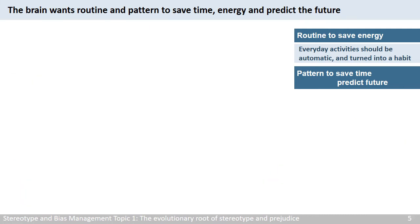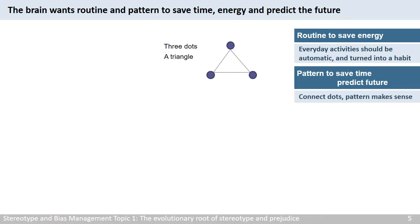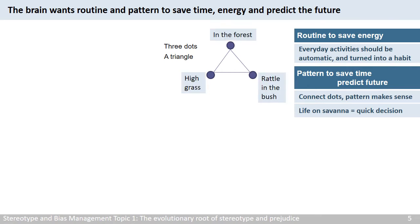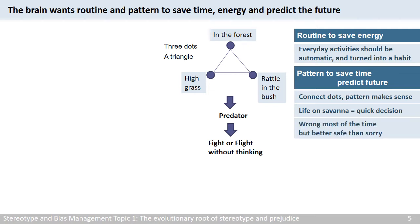Here is a way to look at it. Can you tell me what you see? Some of you may say three dots; for others, it is a triangle. What happens is that the brain automatically connects the dots and gives us a big picture — a pattern that makes sense. Long ago, life on the savanna demanded quick decision-making. If our ancestors were in the forest among high grass and there was a rattle in the bush, their brain would connect these dots and tell them there could be a predator — this pattern means danger. The decision of fight or flight comes quickly, without thinking. They could be wrong most of the time, but better safe than sorry. The brain, therefore, is a pattern-making machine, and that is meant for our own survival.